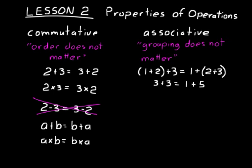A more general way to write this using variables: (A plus B) plus C is equal to A plus (B plus C), where A, B, and C can be any numbers.